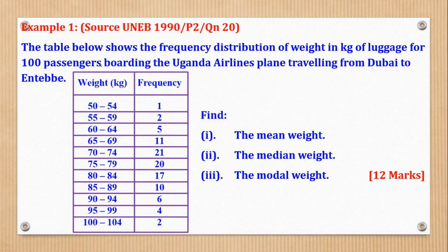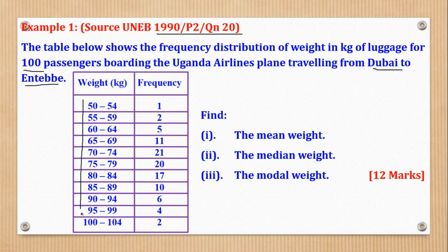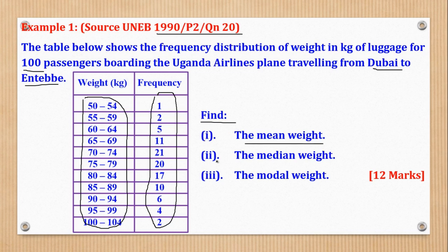Now that you have seen the formulas, let's look at the examples. Example 1 came from UNEB 1990, Paper 2, Question 20. It says: the table below shows the frequency distribution of weight in kilograms of luggage for 100 passengers boarding the Uganda Airlines plane traveling from Dubai to Entebbe. The weights are grouped into classes with corresponding frequencies. They ask us to find: (i) the mean weight, (ii) the median weight, and (iii) the modal weight.